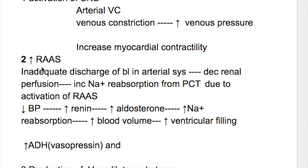Number two is increased activity of the renin-angiotensin system. Inadequate discharge of blood in the arterial system decreases renal perfusion and increases sodium reabsorption from the proximal tubule due to activation of the renin-angiotensin system. Decreased blood pressure leads to increased renin, increased aldosterone production, increased sodium reabsorption, increased blood volume, and that leads to increased ventricular filling.